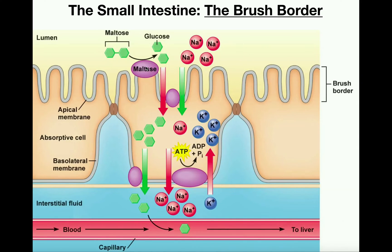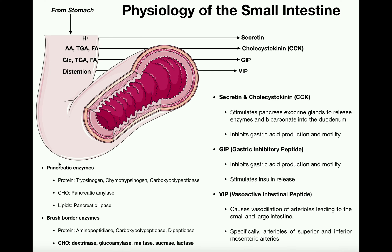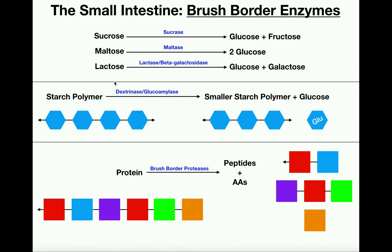That's what constitutes a brush border enzyme. The brush border enzymes that degrade carbohydrates are going to be dextrinase, glucoamylase, maltase, and lactase. For proteins, we're going to have aminopeptidase, carboxypeptidase, and dipeptidase. What you'll notice about brush border enzymes is that we really don't have any that degrade lipids — those in contrast are going to be secreted by the pancreas. Let's look at the various reactions of brush border enzymes, because these might be important to know for your course.